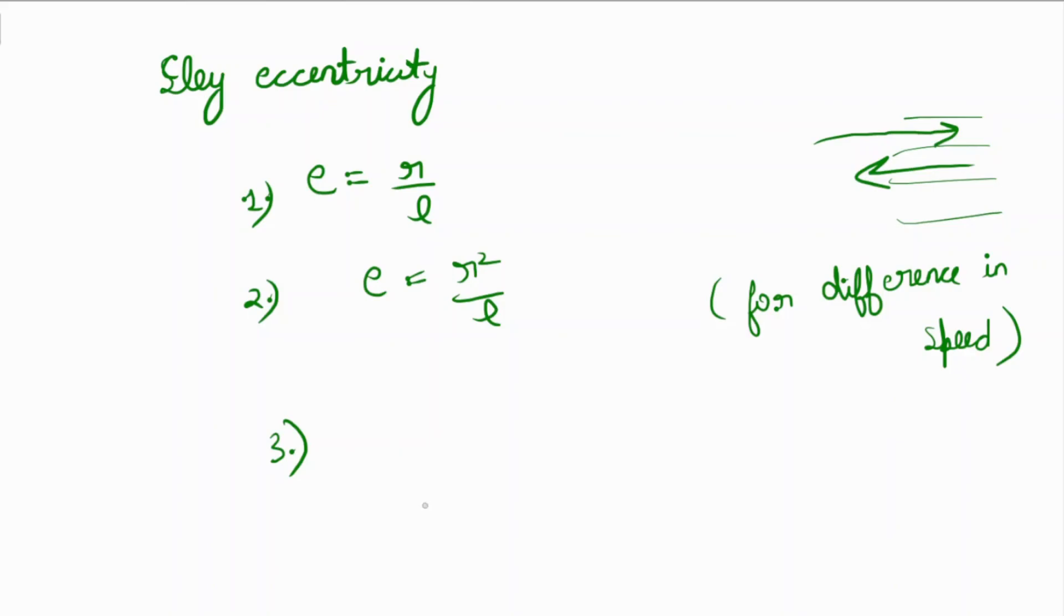So af, acceleration forward upon acceleration backward, is equal to e plus one upon e minus one.